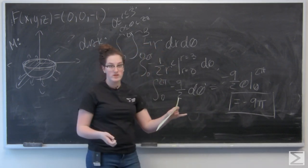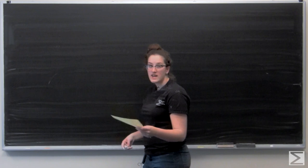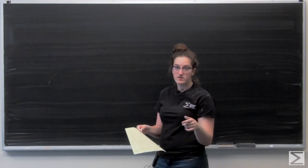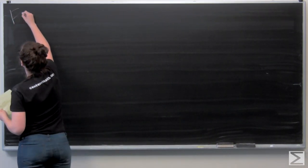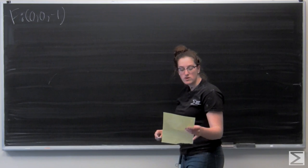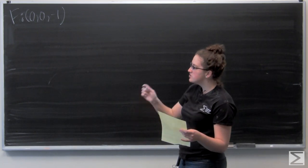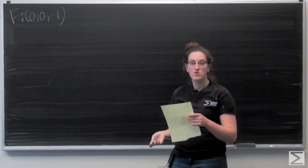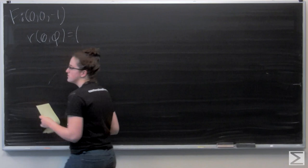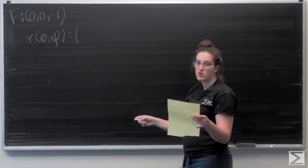Now I'll move on to the bottom hemisphere. The vector field is constant, so f evaluated on the hemisphere is just 0, 0, negative 1. I need to parametrize the bottom half of the hemisphere using spherical coordinates, which gives three variables: rho, theta, and phi. I'll hold rho constant at 3 because that is the radius of the sphere. Recall spherical coordinates: rho sine phi cosine theta, rho sine phi sine theta, and rho cosine phi.